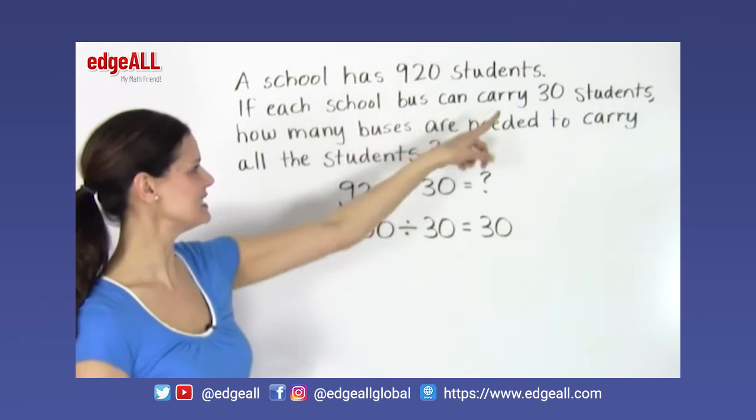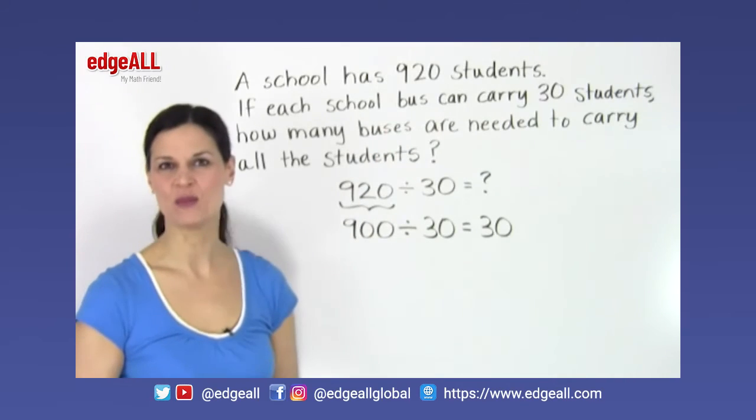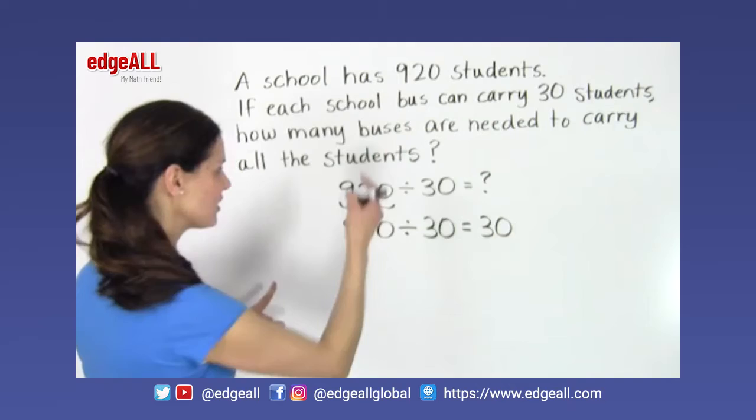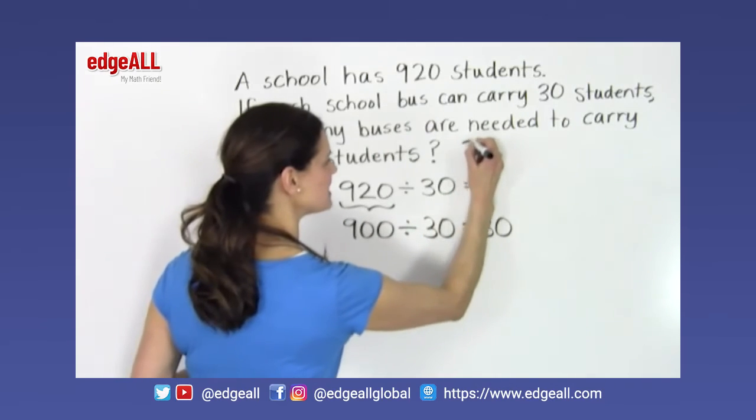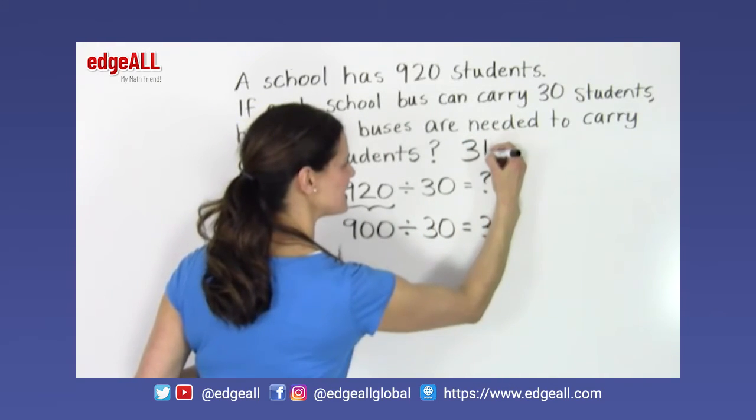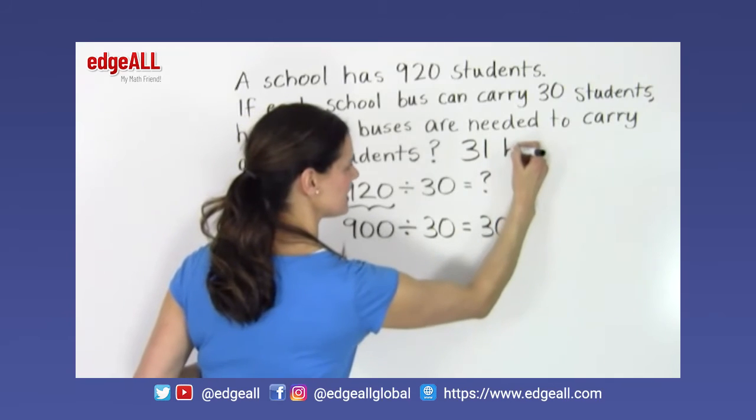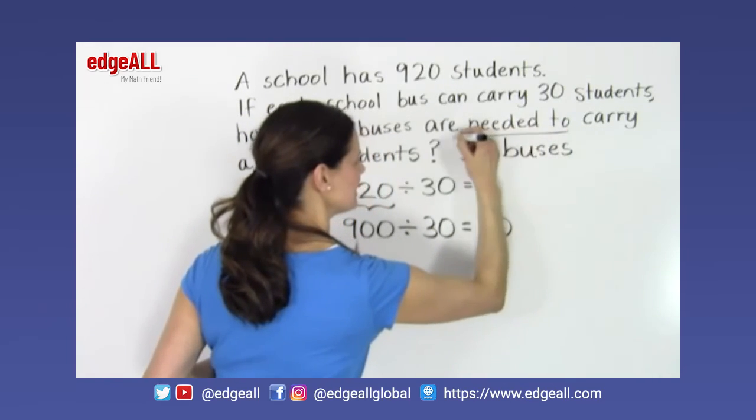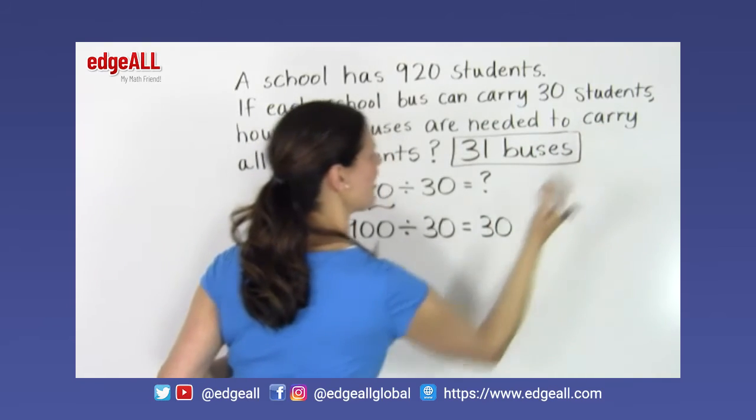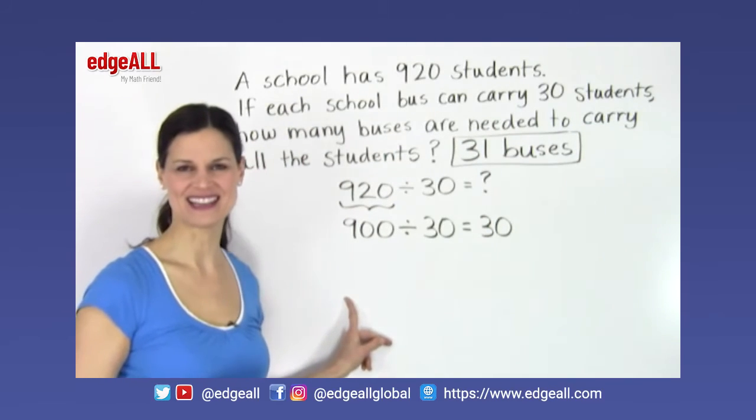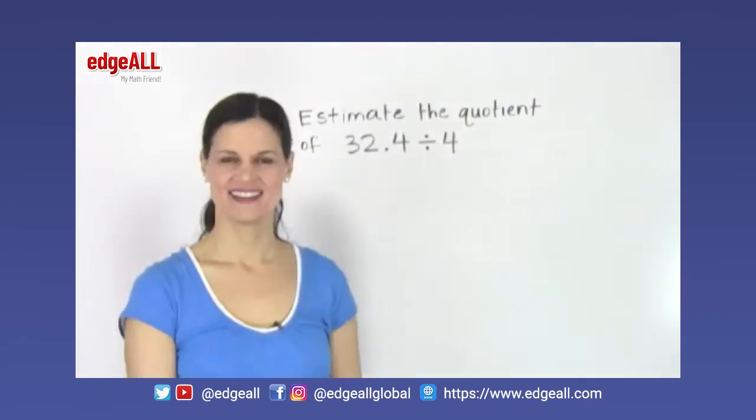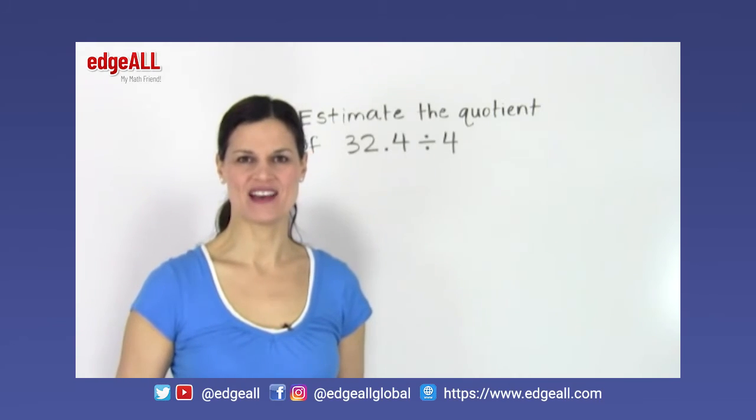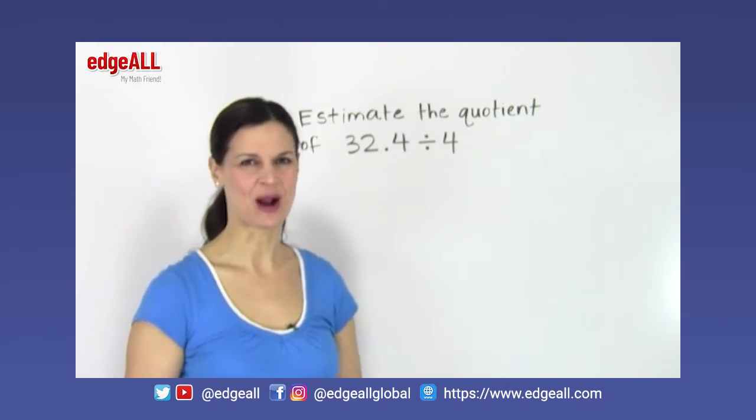We'd have 10 empty seats, but we would need one more bus for these students. And so the answer, the solution to my problem, is that we would need to add one bus to here, and we would need 31 buses in order to carry all 920 students.